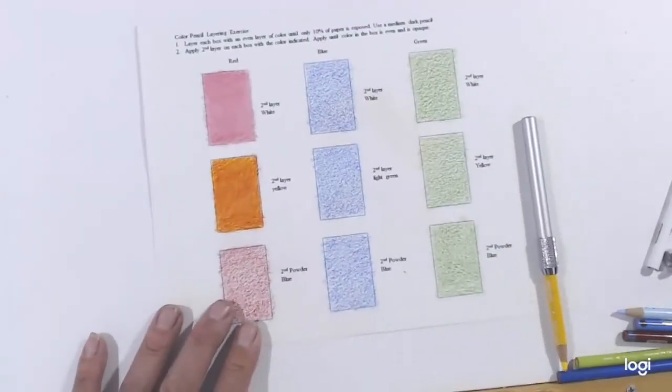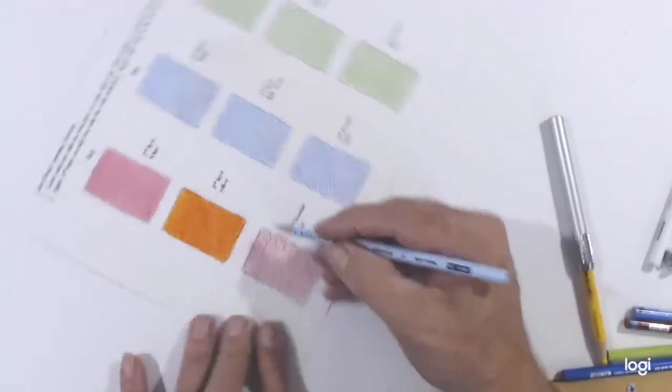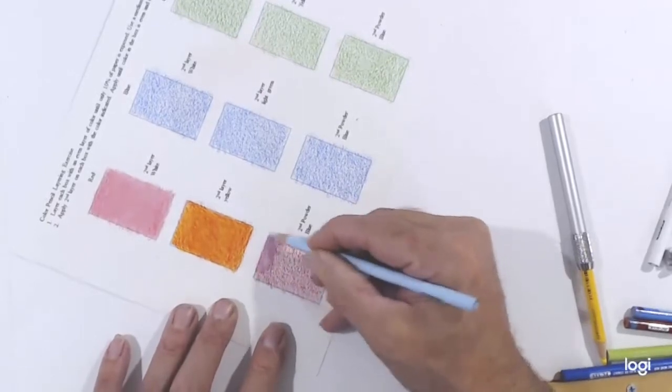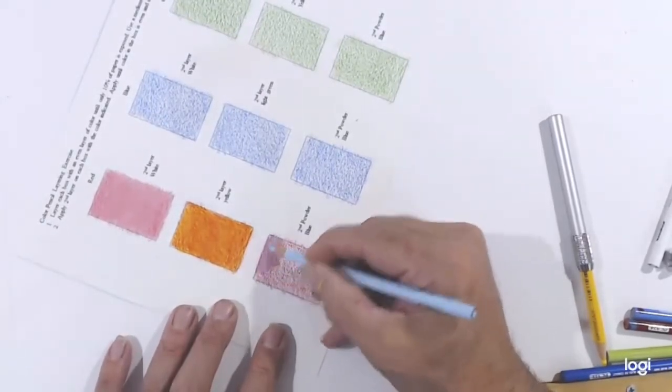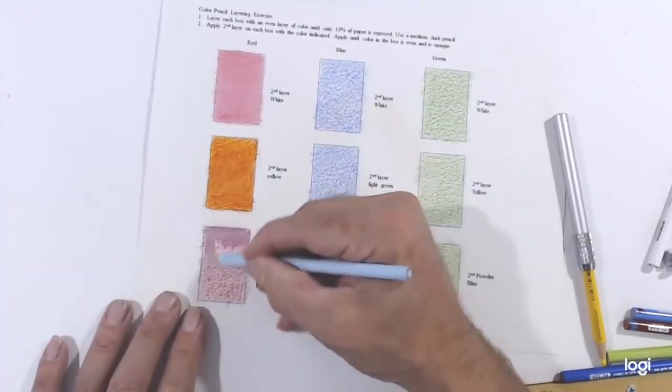I will use powder blue for the third box and go over that to also attempt to blend it. It will also create a different effect, but my goal will be to make an even opaque color when I'm done.